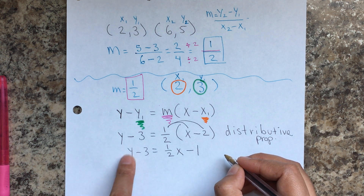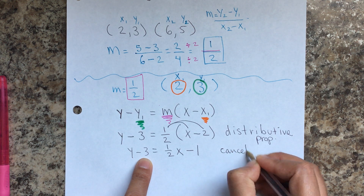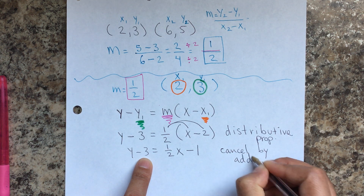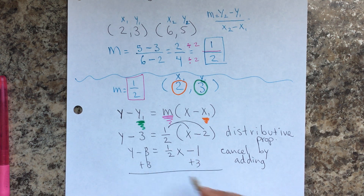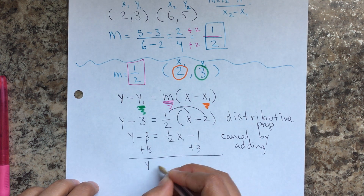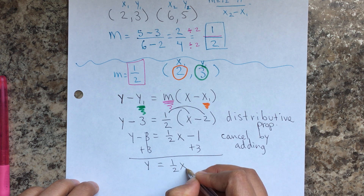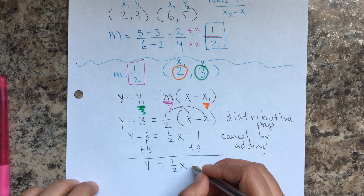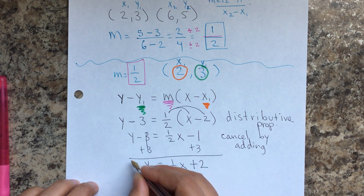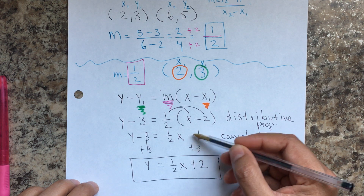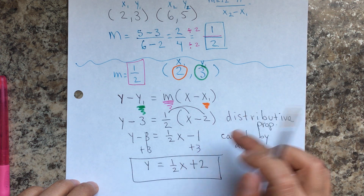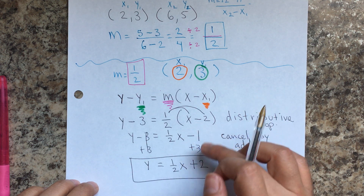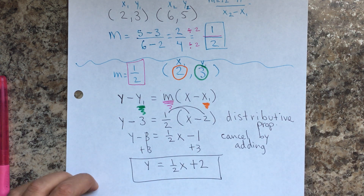The next step to leave y by itself is to cancel by adding. If we're subtracting 3, we're going to add 3 to both sides so I can leave y by itself. So it's going to be y equals 1 half x, then negative 1 plus 3, which is going to be plus 2. Remember that when adding or subtracting integers with different signs, we subtract and always keep the sign of the biggest number. Only in addition and subtraction — keep the sign of the biggest number. For multiplication and division, that's different.